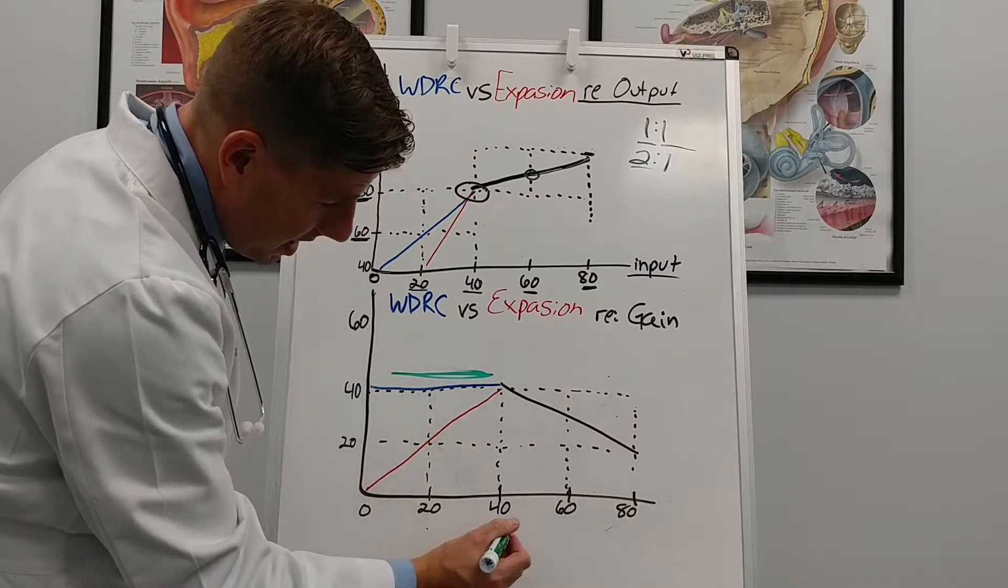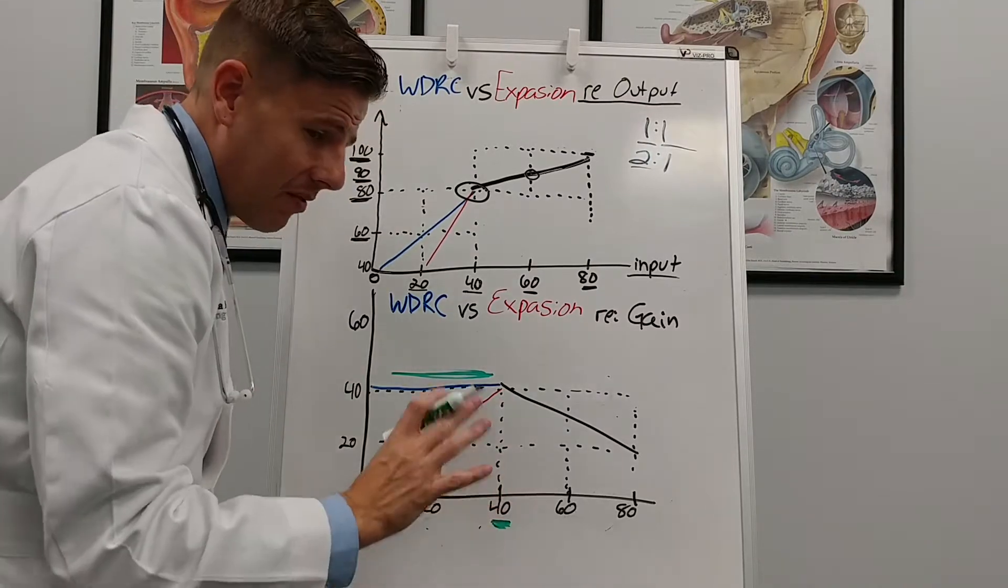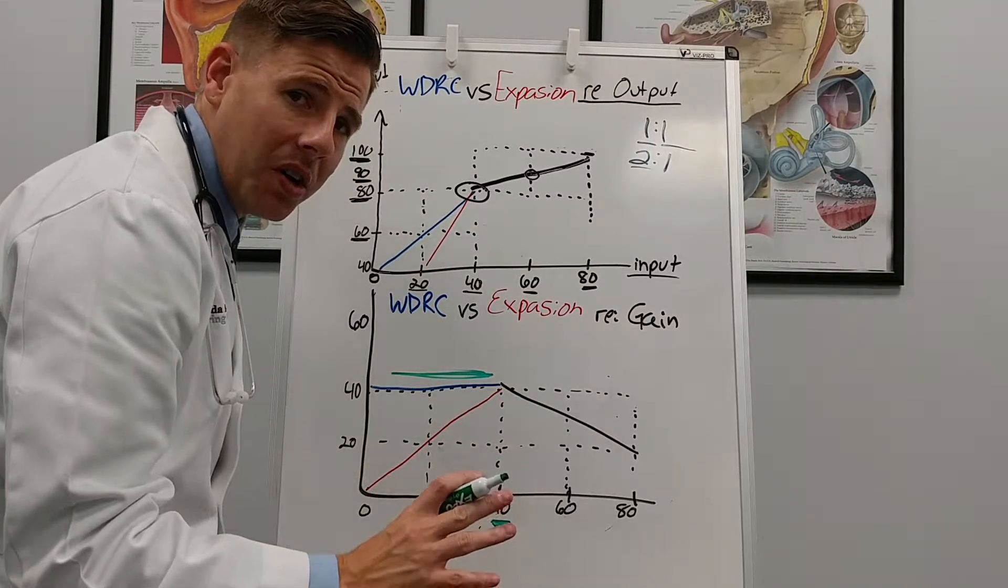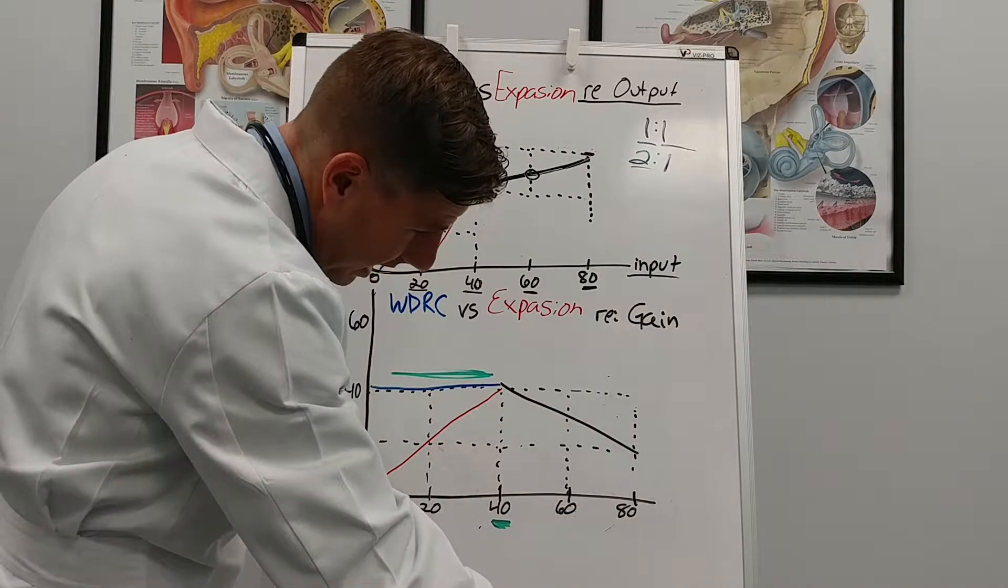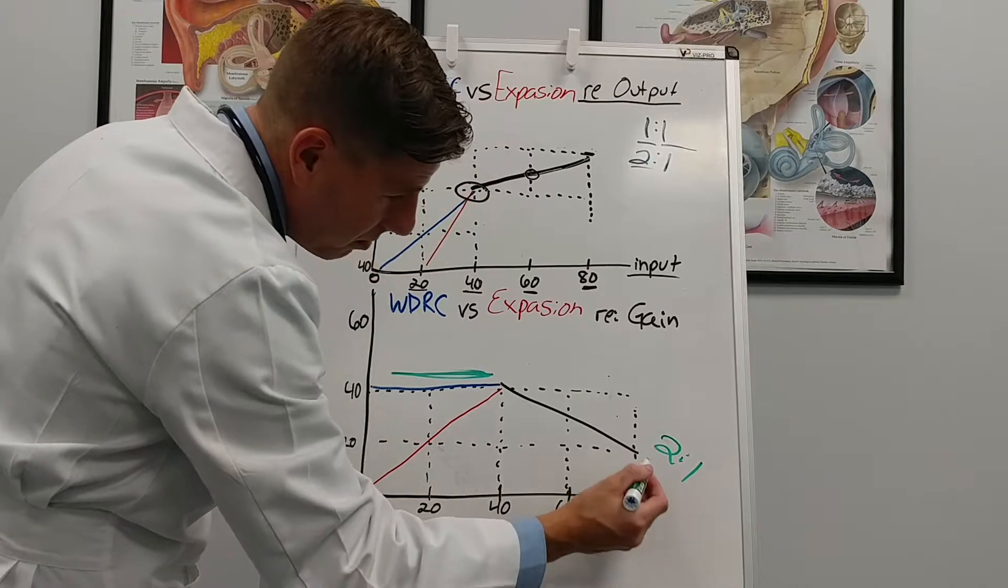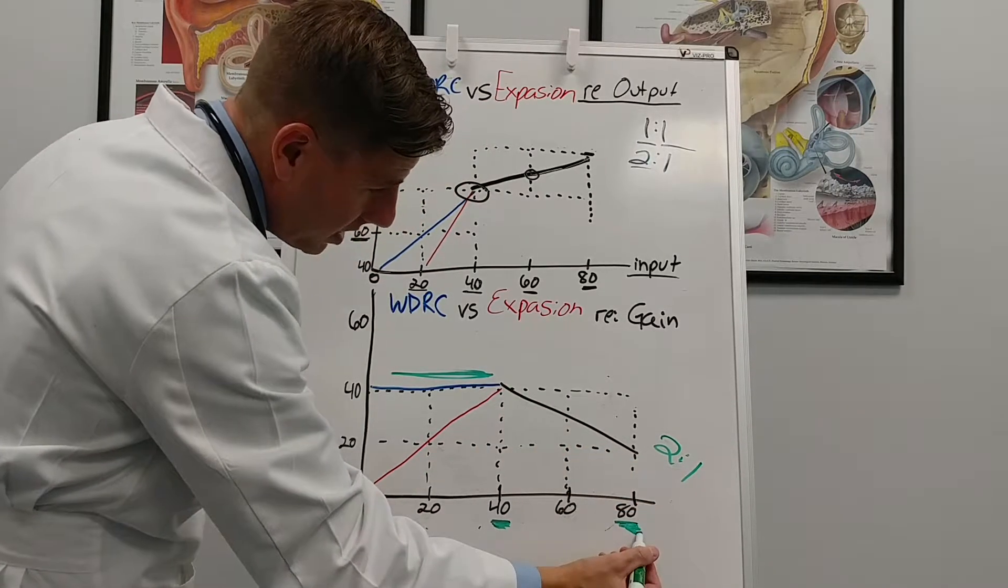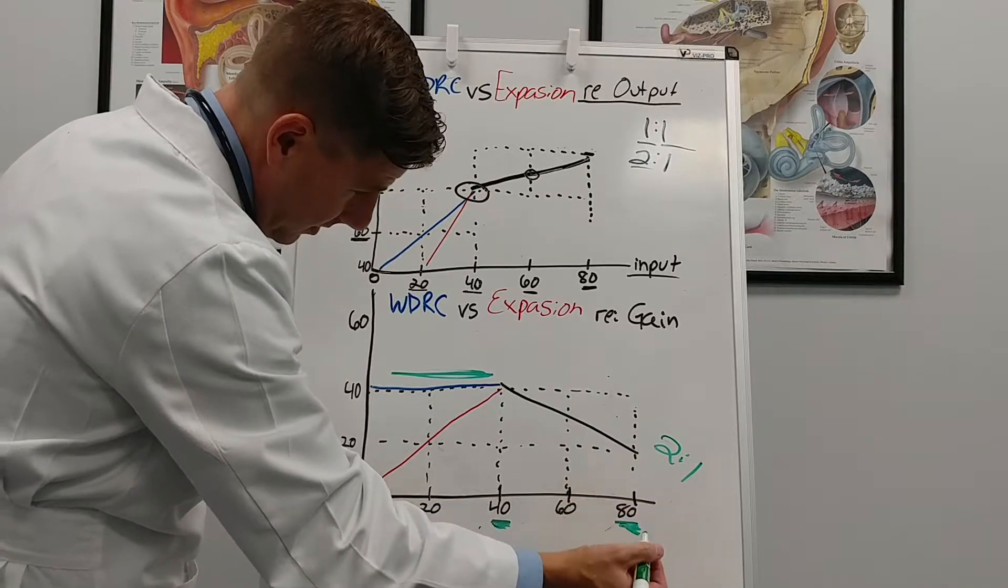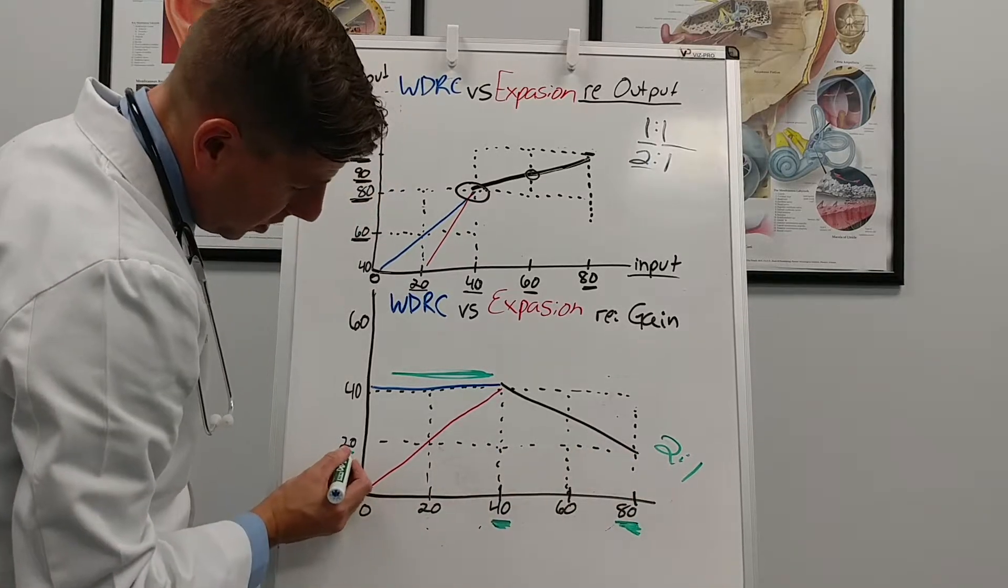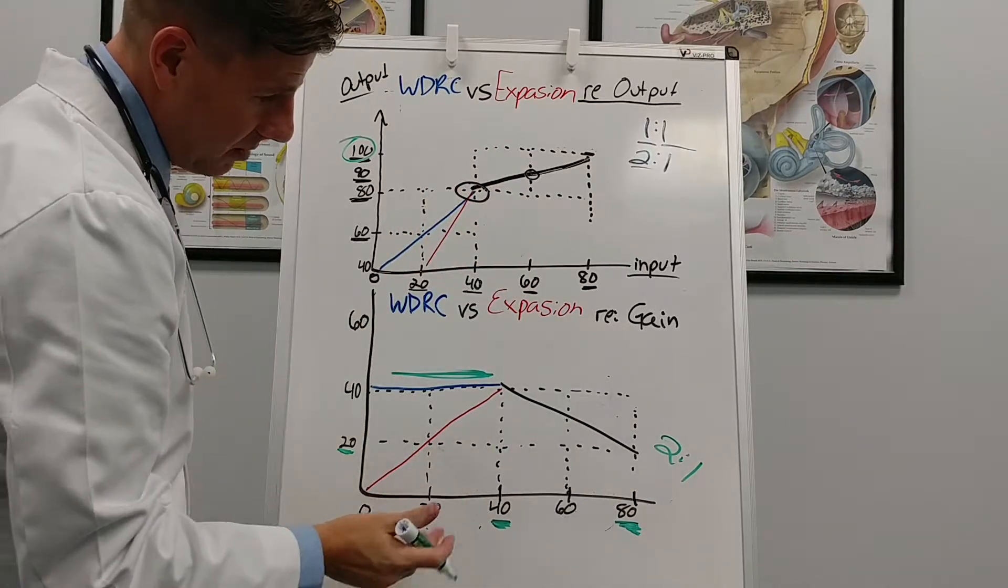But what happens again is at 40 I no longer want to keep adding 40 decibels to what goes above this. I want to start compressing that down. And here you'll notice that at 80 I now have a two to one compression ratio and that means that instead of adding 40 to this I end up adding only 20 to it which will bring us to 100. It's the same thing just a different aspect of it.